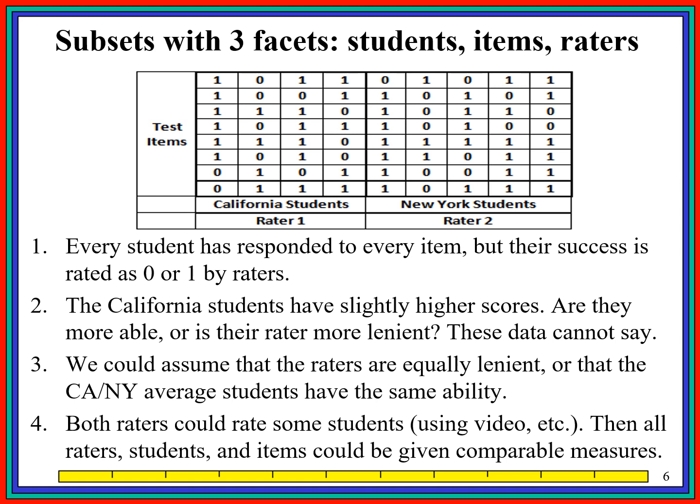We may be able to make assumptions about this — for instance, we may assume the raters are equally lenient, or the average abilities of the two sets of students are the same, and we can tell FACETS to impose those assumptions. It would be better if we could arrange for rater 1 and rater 2 to rate the same students, which is often done using video. Rater 1 and rater 2 would both look at videos of the same students or the same student report sheet, and rate both students so we get some linking between the two sets of data. At the moment, it's really two separate data sets analyzed at the same time.